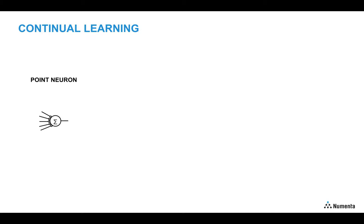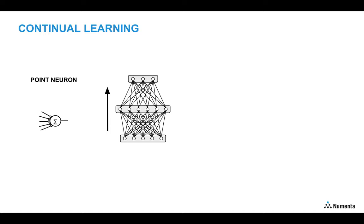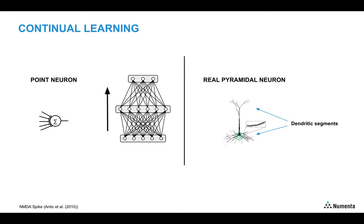Artificial neural networks that aim to learn continually use point neurons, which abstract away many details of real neurons in the brain. When learning with backpropagation, all parameters in the network are changed and thus the network suffers from catastrophic forgetting. We try to incorporate properties of active dendrites in our model which are thought to help with continual learning in the brain.